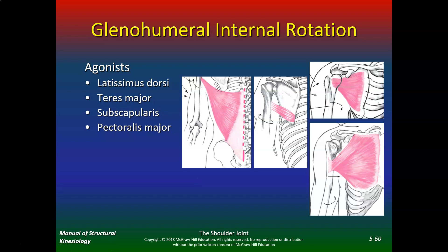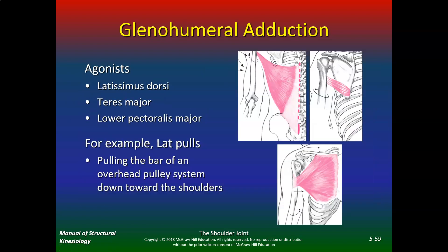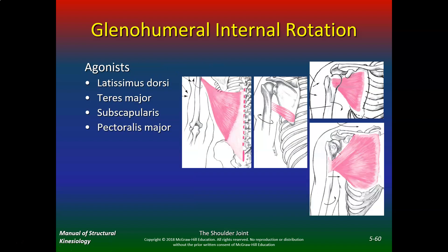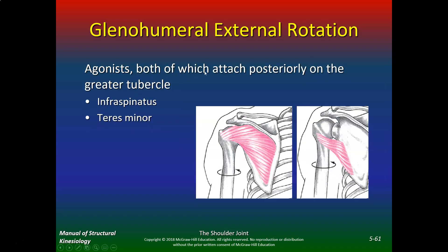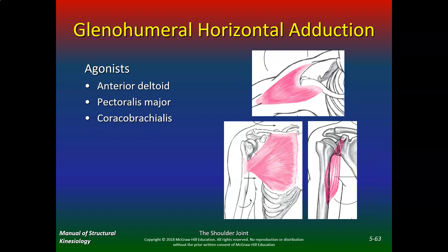The agonists for internal rotation are lats, teres major, subscapularis, and pec major. You have many more powerful muscles doing internal rotation versus external rotation — that's the imbalance, which is why you really have to work the external rotators. The external rotation agonists, both attaching posteriorly, are infraspinatus and teres minor. For horizontal abduction: posterior delt, middle delt, infraspinatus, and teres minor. For horizontal adduction: anterior delt, pectoralis major, and coracobrachialis.